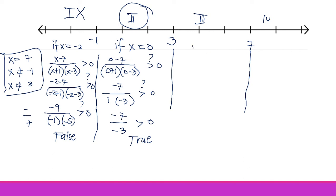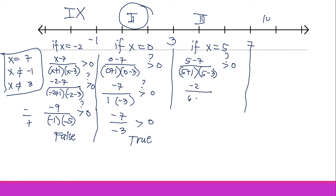Testing Region 3, let x equal 5. We get (5 minus 7) over (5 plus 1)(5 minus 3) equals negative 2 over (6)(2) equals negative 2 over 12, which is negative. That cannot be greater than zero, so Region 3 is false and is excluded.